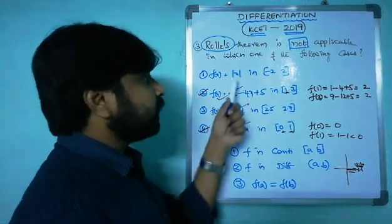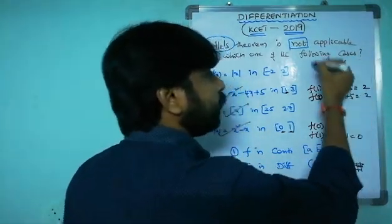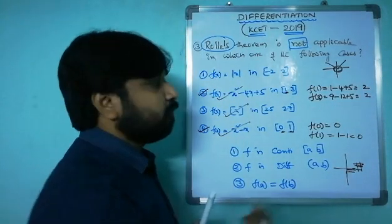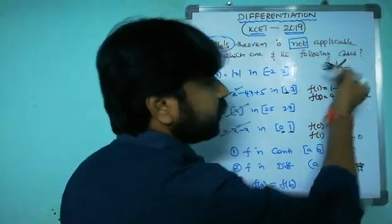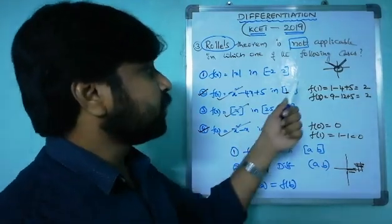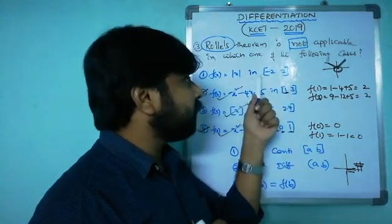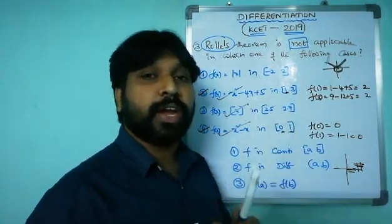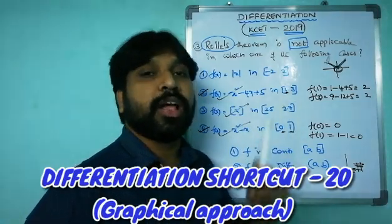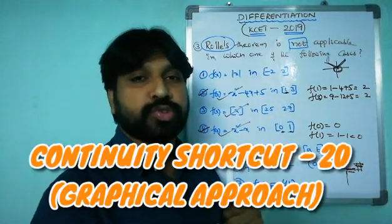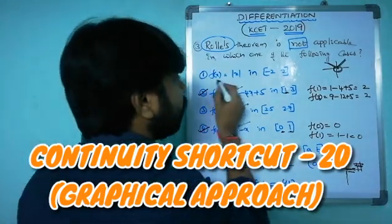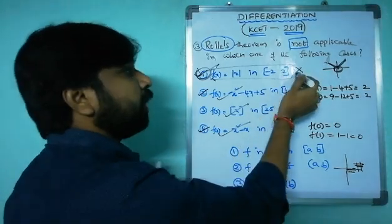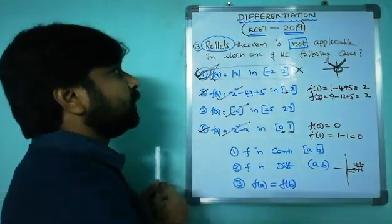Option 1 is f(x) = |x| on [-2, 2]. The modulus function is a V-shaped curve — it is continuous everywhere on [-2, 2], but it is not differentiable at x = 0 because it has a sharp bend there. Therefore Rolle's theorem is not applicable, and the answer is option 1.